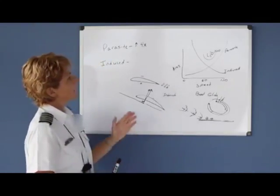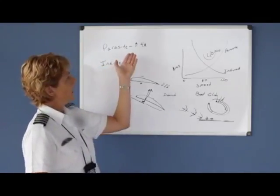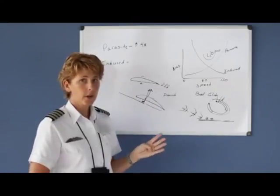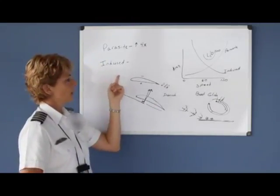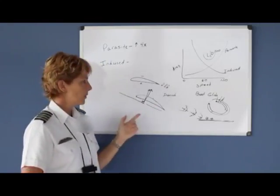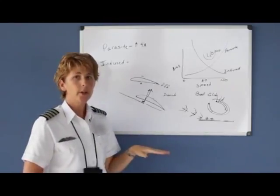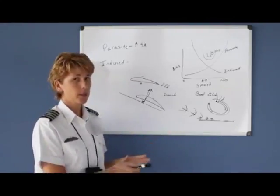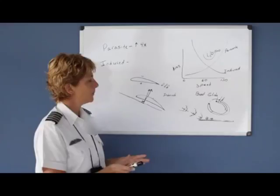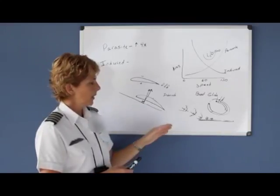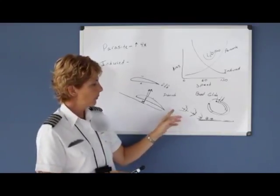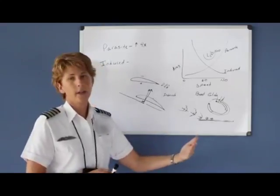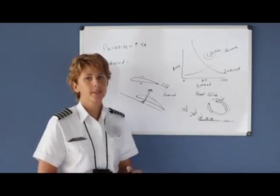To recap: parasite drag increases at four times the rate of your airspeed increase, and induced drag becomes worse and worse the slower you go — especially with a high angle of attack and especially with power. Now let's look at how to avoid these wing tip vortices when a large aircraft is landing or taking off in front of us.